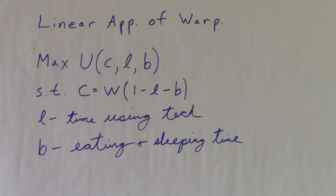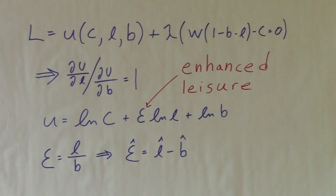We will get a linear approximation of the warping phenomenon with a rational choice in a standard utility maximization problem. Utility is a function of consumption, leisure, which is time using goods, and body time, which is eating and sleeping time, the measured circadian activities. The key result is the marginal rate of substitution between leisure and body time is always equal to 1.